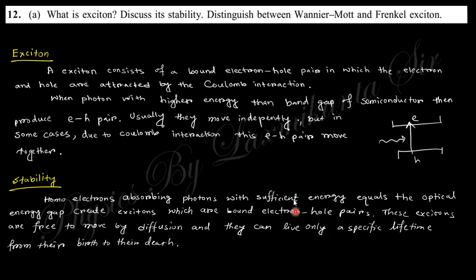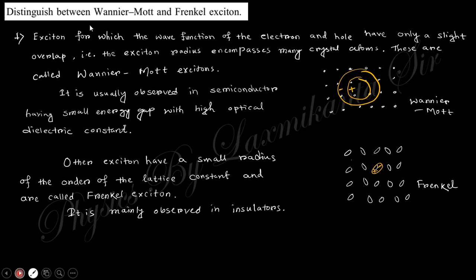There are two types of exciton: Wannier-Mott and Frenkel exciton. This is the Wannier-Mott exciton - there is a cloud of negative and a cloud of positive, so there is large size. But in small size, Frenkel exciton is originated.